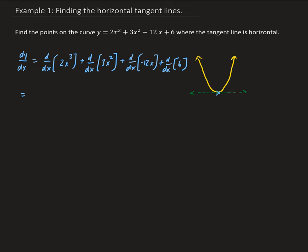So we're going to get the derivative of 2x cubed. Using the power rule, I'm going to bring down the 3 and subtract 1 from the exponent, so we get 6x squared. Then using the power rule again, we get 3 times 2 times x to the power of 1. The derivative of negative 12x gives us negative 12, since the derivative of x is just 1. And the derivative of a constant is 0. So simplifying, we get 6x squared plus 6x minus 12.